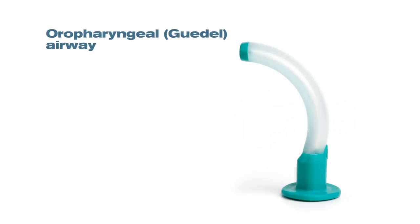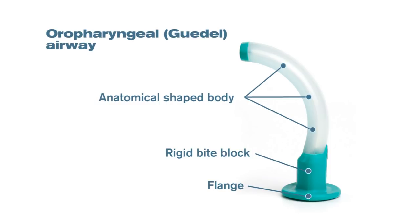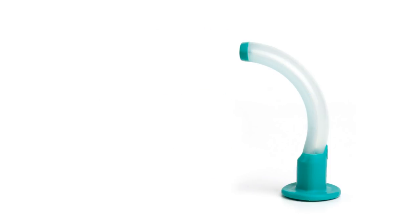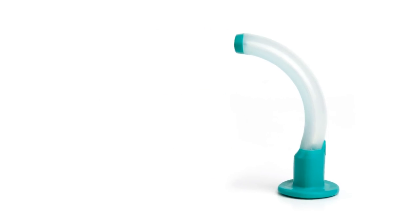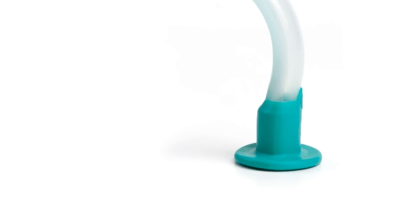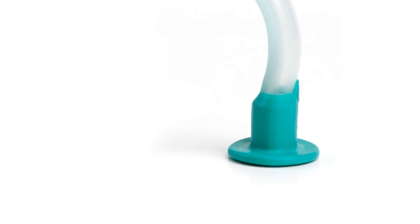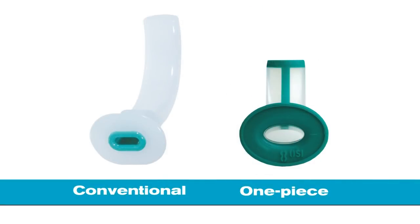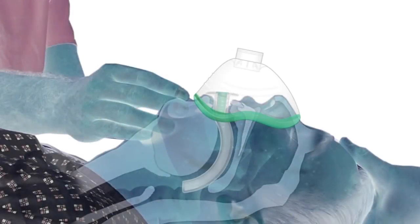They consist of a flange, a rigid bite block and an anatomically shaped body. For safety purposes, the inter-surgical oral pharyngeal airway has been designed without the conventional bite block. The one-piece design overcomes the risks of dislodgement of the bite block, which could actually cause an obstruction of the airway.